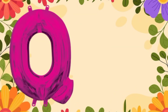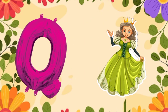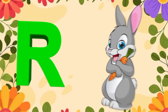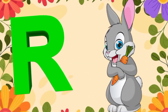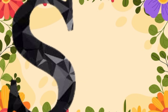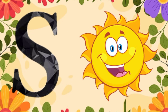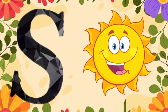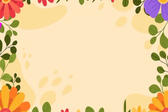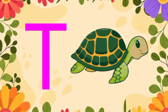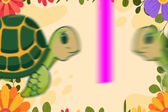Q is for queen, k-k-queen. R is for rabbit, r-r-rabbit. S is for sun, s-s-sun. T is for toad, t-t-toad.